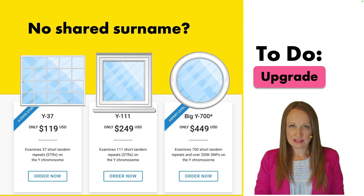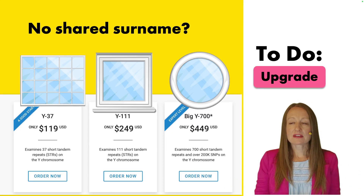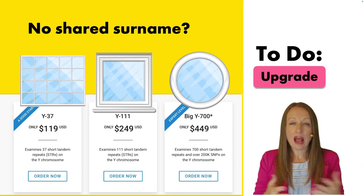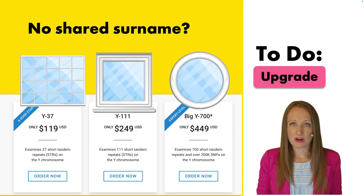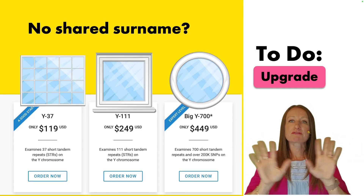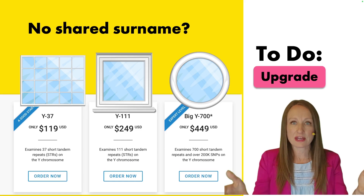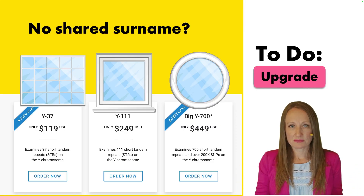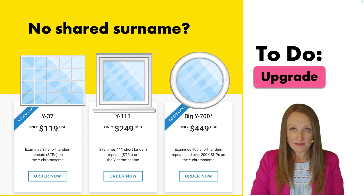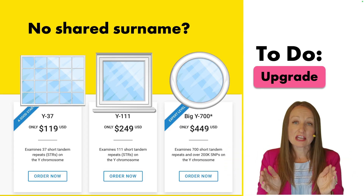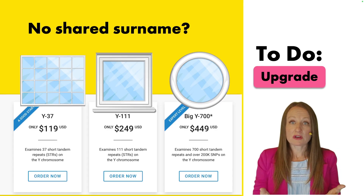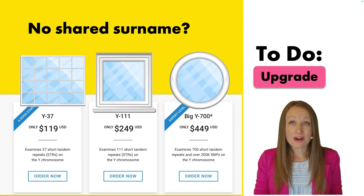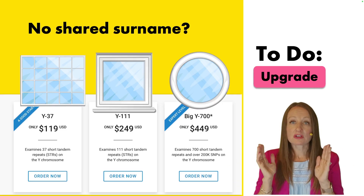I like to think of each of these tests like a window in your house — it defines the window of relationship, meaning how big is that range from which you can choose how you're connected. If you test at the 37 marker level, think of it like that big bay front window where you can see the whole neighborhood. You get a wide range of possible relationships. If you upgrade to 111 markers, that big bay window shrinks down to a much more manageable size, like a bedroom window — a decent view, but a much shorter time frame.